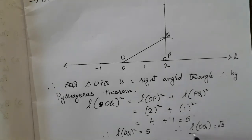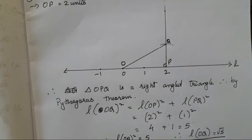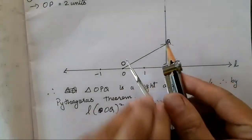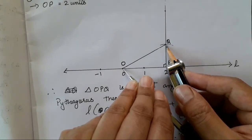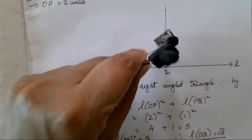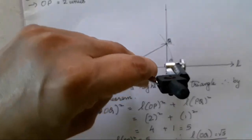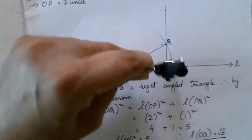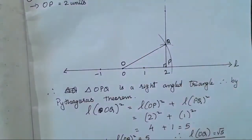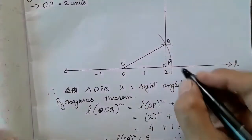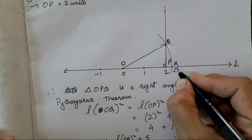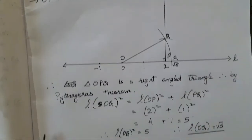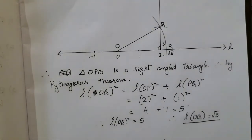So we have to mark root 5. How are you going to mark root 5 now? For this, you all have to use this distance and draw an arc. This point is supposed to be arc root 5. Is it clear?